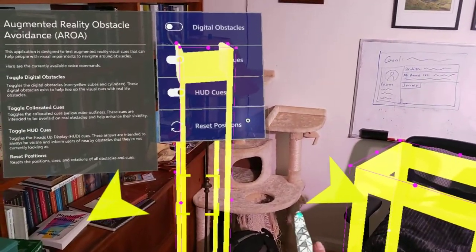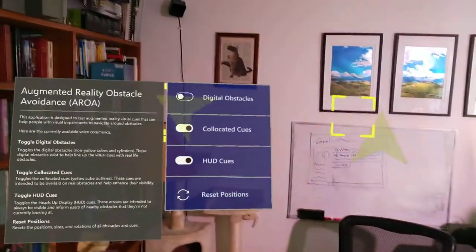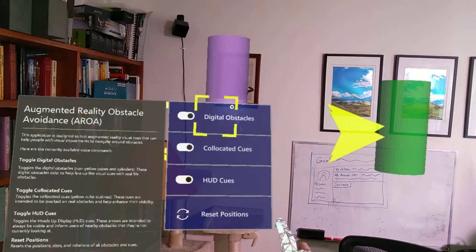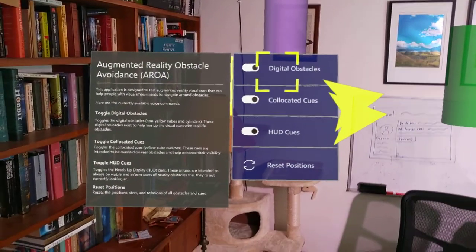And then finally, what we can do is reset positions. If one of the cubes gets lost, it's just a simple trick to reset those to how they originally were located. That's it for this update.